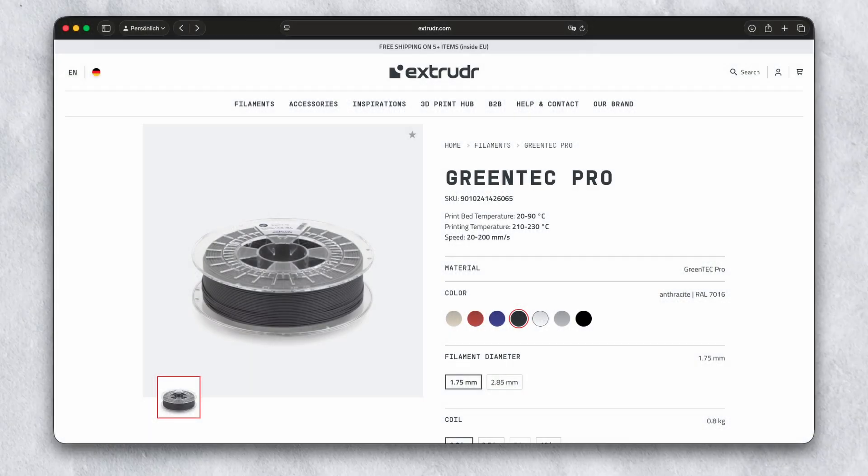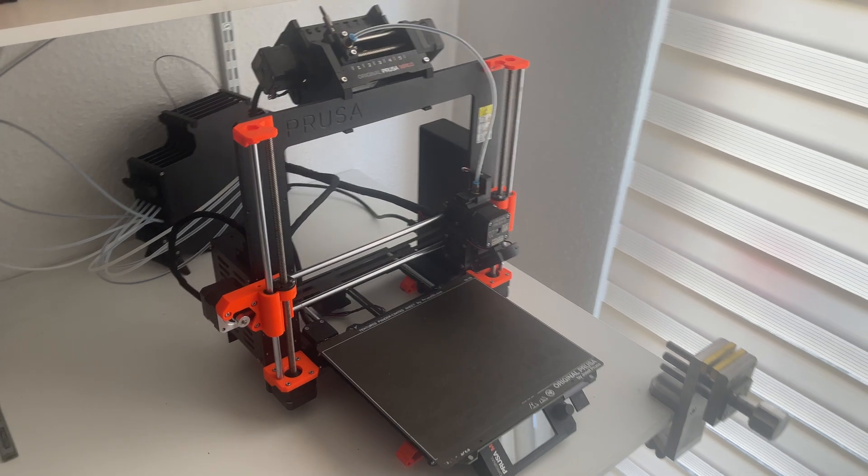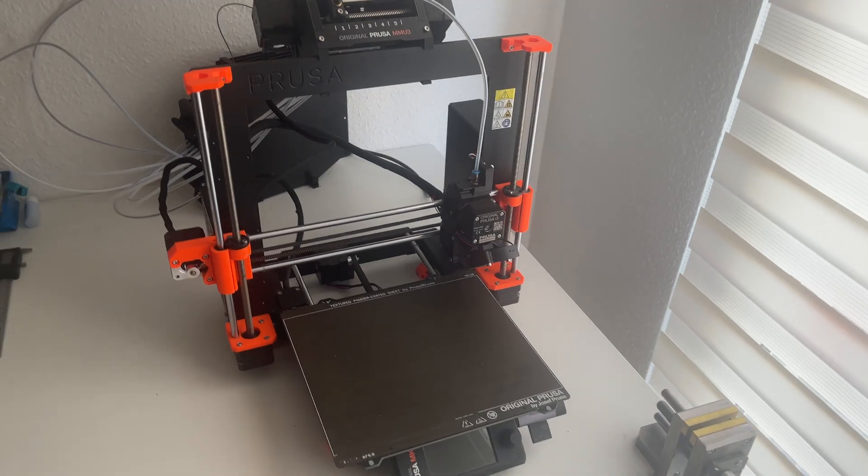Green Tech Pro on the other hand is already quite stiff. It's sitting somewhere in the middle of the range. It prints as easily as PLA. So you don't need an enclosure for it.